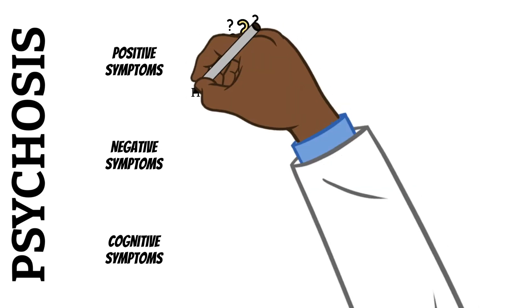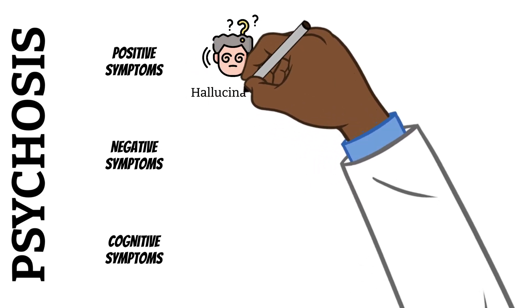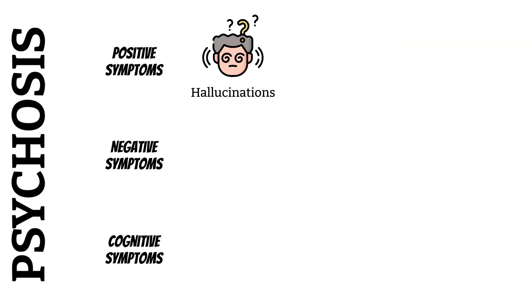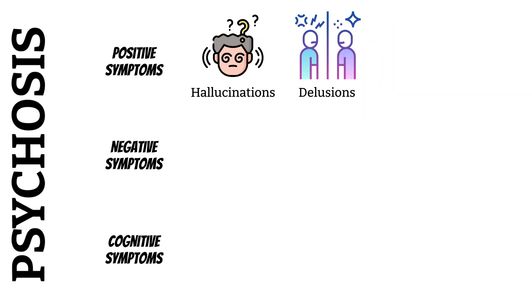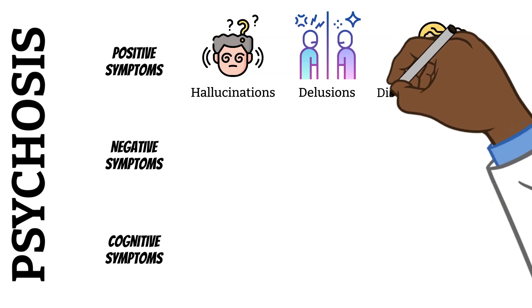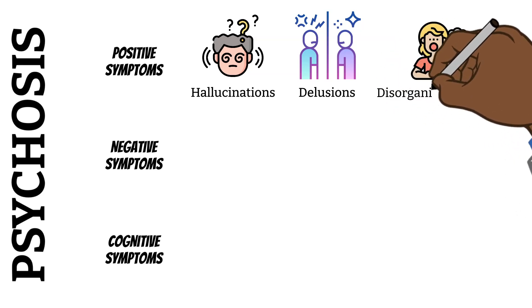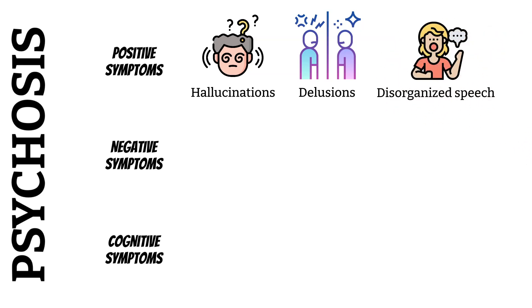Examples of positive symptoms include hallucinations — seeing, hearing, feeling, tasting, or smelling things that aren't there. Delusions — believing things that are untrue, such as someone trying to harm you. And disorganized thinking or speaking, where speech may be fast or constant, or the person may switch topics mid-sentence.